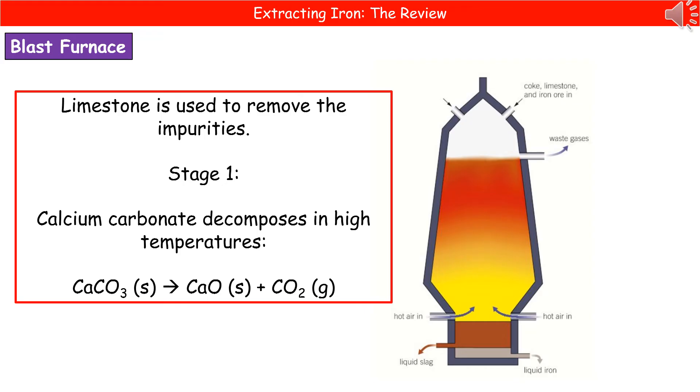First stage is that the calcium carbonate is decomposed in these high temperatures in a process called thermal decomposition. Decomposition is breaking down, thermal meaning heat. So our calcium carbonate is going to break down in heat to make calcium oxide and carbon dioxide.